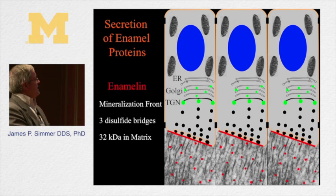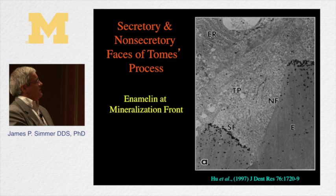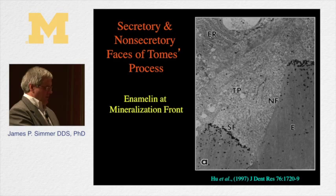Enamelin — discovered by the next speaker — is present right at the mineralization front and is central to the elongation of the mineral ribbons. Using immunohistochemistry, you can see the enamelin proteins localized along the mineralization front of the Tomes' process. This is part of the mineralization front apparatus that allows the crystals to elongate.